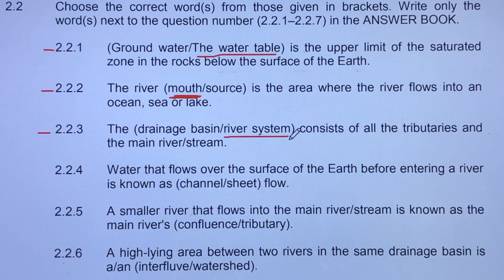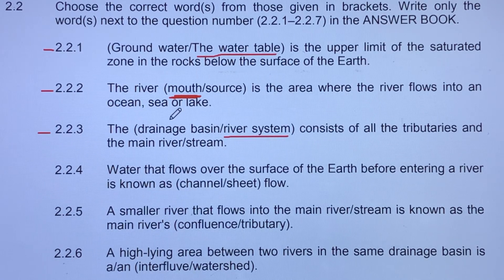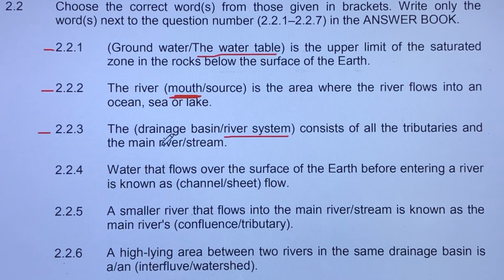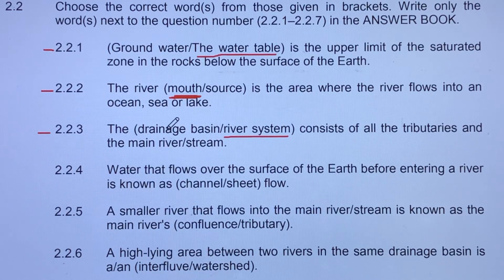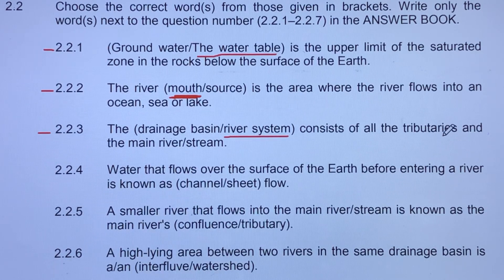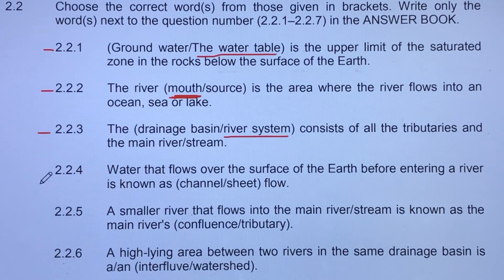A drainage basin, by contrast, focuses on the area that is drained by the river and its tributaries — it's that underlying drained area. But when we talk about the tributaries and the river only, that is a river system.